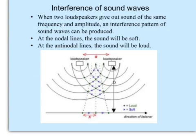Now, let's look at interference of sound waves. The two sources of sound waves are two loudspeakers. When two loudspeakers give out sound of the same frequency and amplitude, an interference pattern of sound waves can be produced.